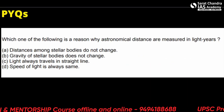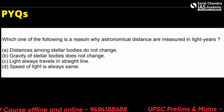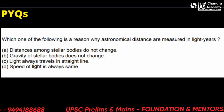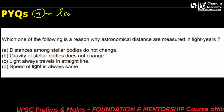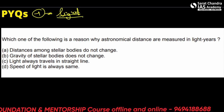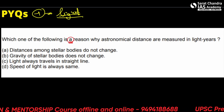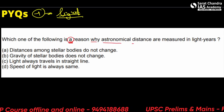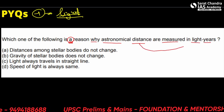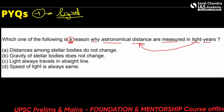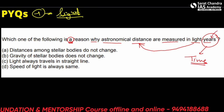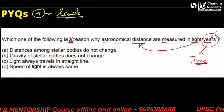Now coming to the important portion — the PYQs, or previous year questions — to see whether the topics we read actually came in the exam. The first question is about light and astronomical distances: 'Which of the following is a reason why astronomical distances are measured in light years?' First, a light year is a measure of distance, not time — though the word 'year' is combined with it.